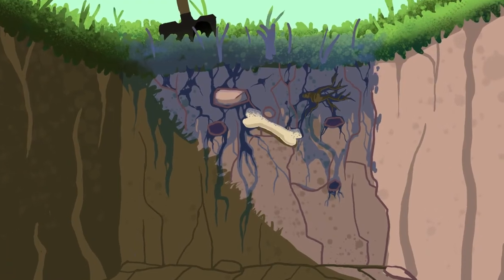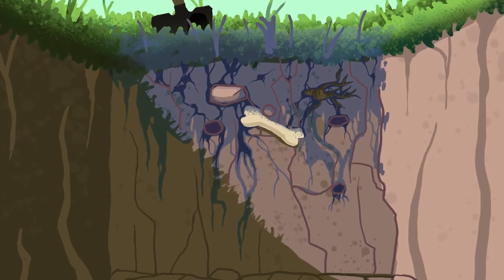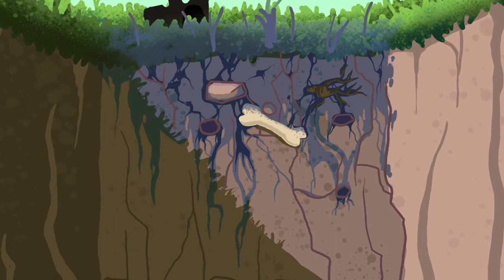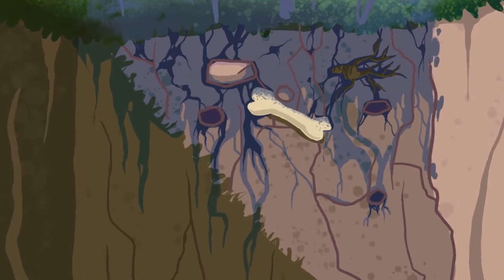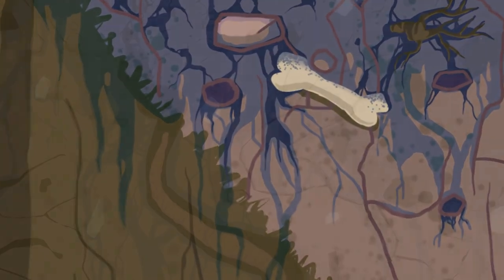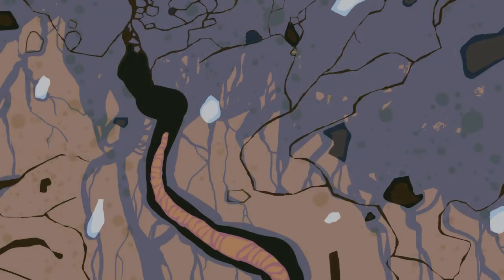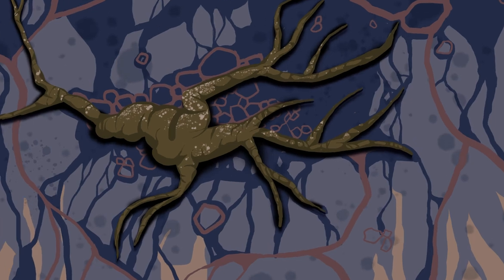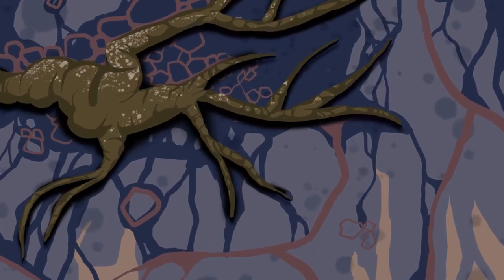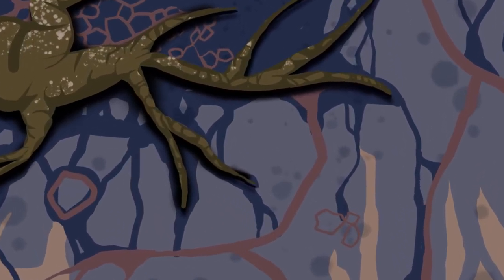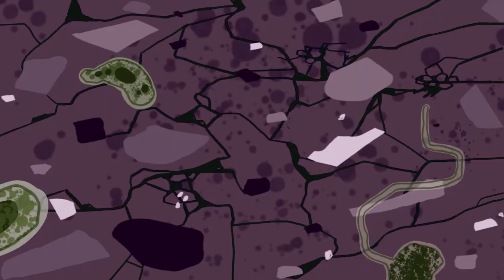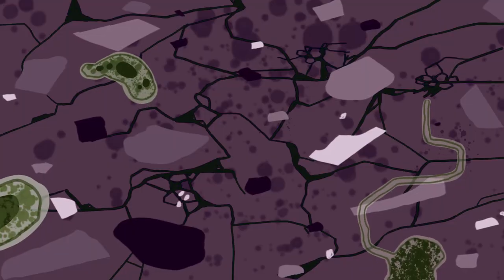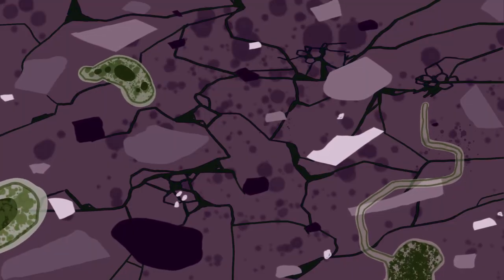Why didn't the dye infiltrate the soil uniformly? It's easy to spot some of the reasons. Here, it ran down this wormhole. Over here, it followed the path of a root. But we need to look at the soil microscopically to understand some of the other flow patterns.